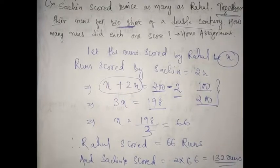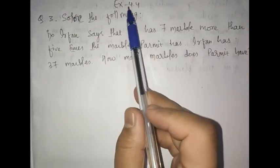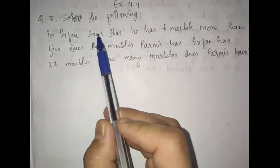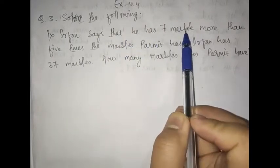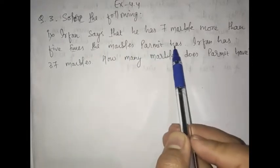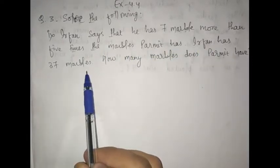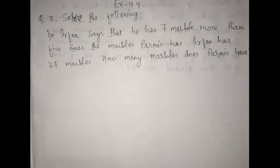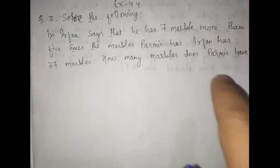Now we will proceed to our class assignment. Here we have question number 3 from exercise 4.4. This will be our class assignment. Here we have part 1. The question says: Irfan says that he has 7 marbles more than 5 times the marbles Parmit has. Irfan has 37 marbles. How many marbles does Parmit have? This sum was done in the previous class — we formed the equation then. In this video, we are going to form and solve it.